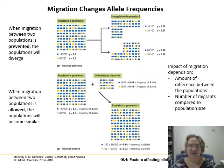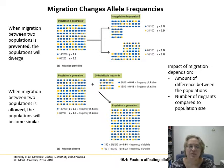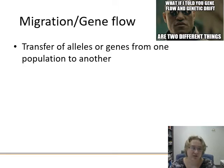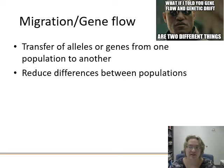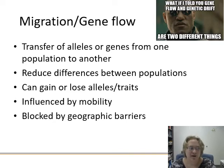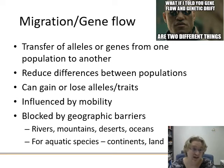The next factor affecting allele frequencies is migration. If you prevent migration between two populations, they'll diverge — that's allopatric speciation. When migration continues, populations remain similar and allele frequencies balance out. The impact of migration depends on how different the populations are and how many migrants arrive relative to population size. Migration is essentially gene flow — transferring alleles from one population to another, reducing differences between populations. It can be blocked by geographic barriers: rivers, mountains, deserts, oceans, and for aquatic species, continents and land masses.